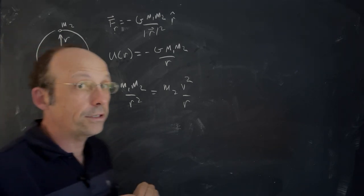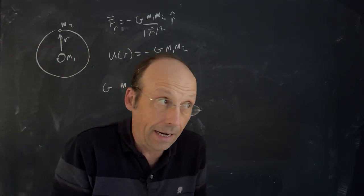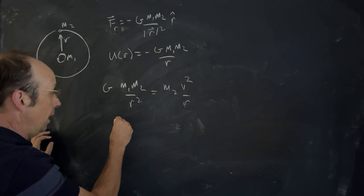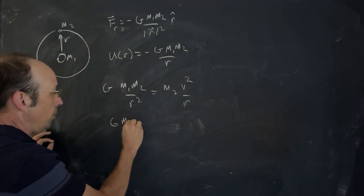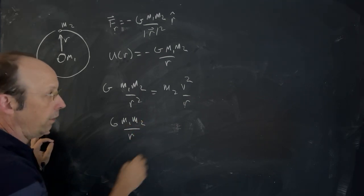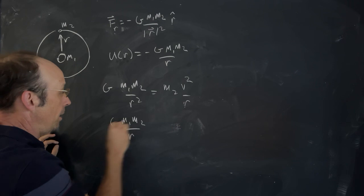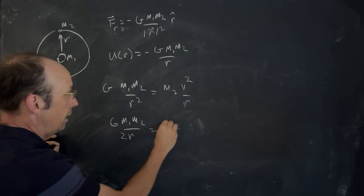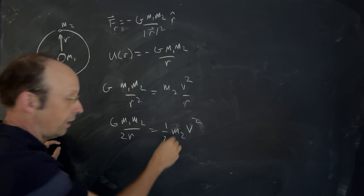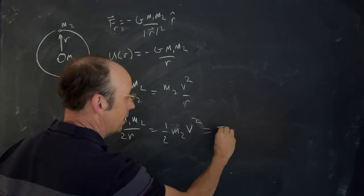What I want to do is find the kinetic energy. I can get the kinetic energy by multiplying both sides by r, then by a half, so I get one half m2 v squared. That's my kinetic energy, that's my T.